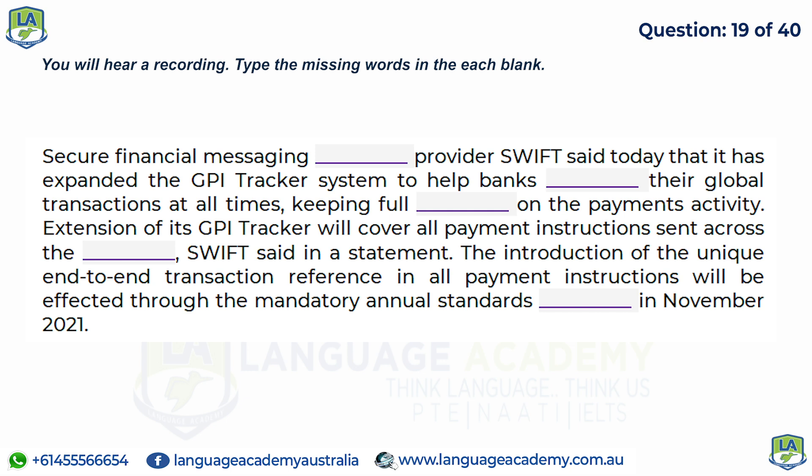Secure financial messaging services provider SWIFT said today that it has expanded the GPI tracker system to help banks track their global transactions at all times, keeping full vigil on the payments activity. The extension of its GPI tracker will cover all payment instructions sent across the network, SWIFT said in a statement.